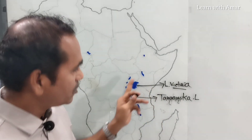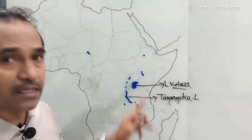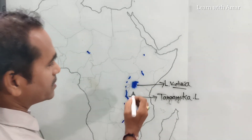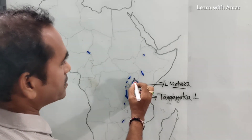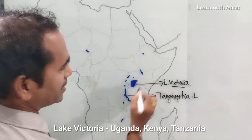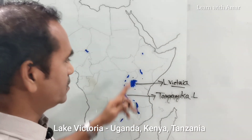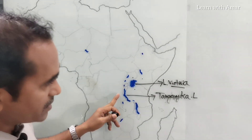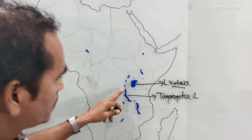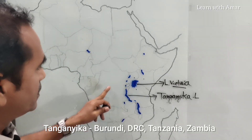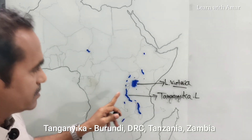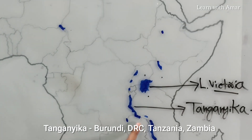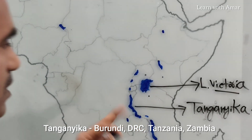Now let us see how many countries this lake covers. Lake Victoria covers Uganda, Kenya, and Tanzania. And Lake Tanganyika covers Burundi — a small country — DRC, Tanzania, and Zambia. Four countries.